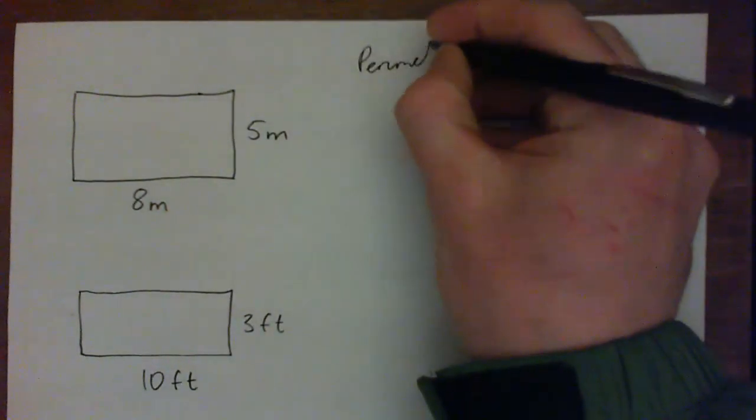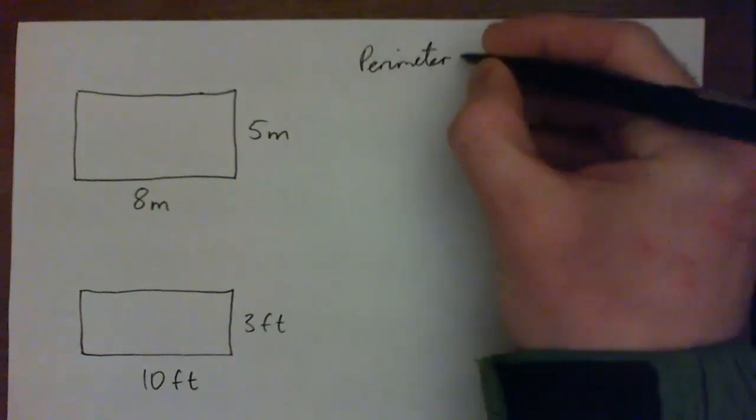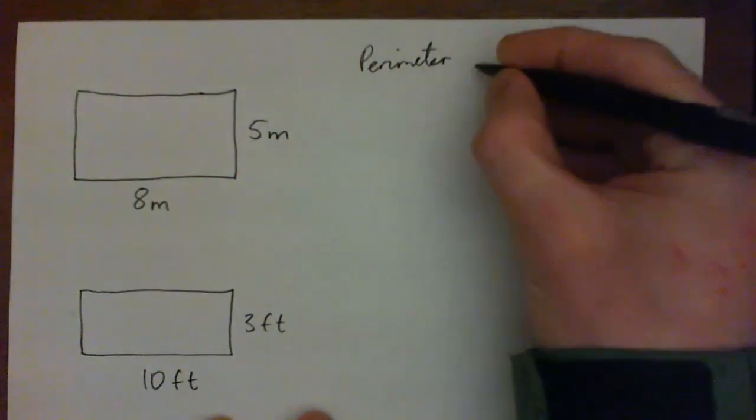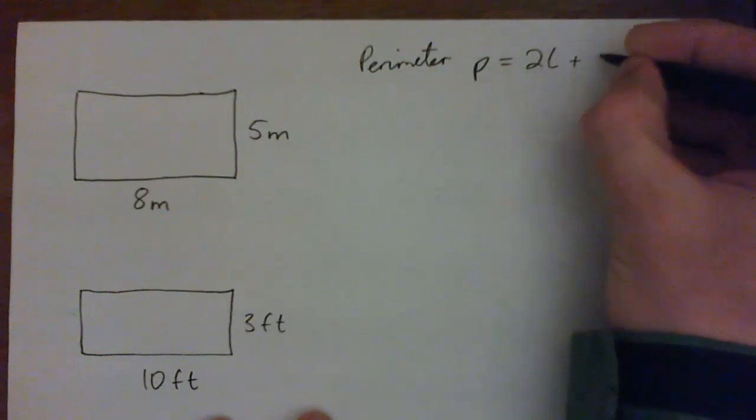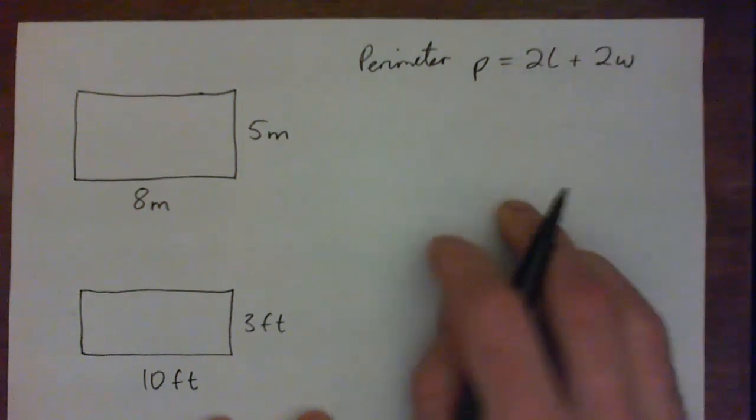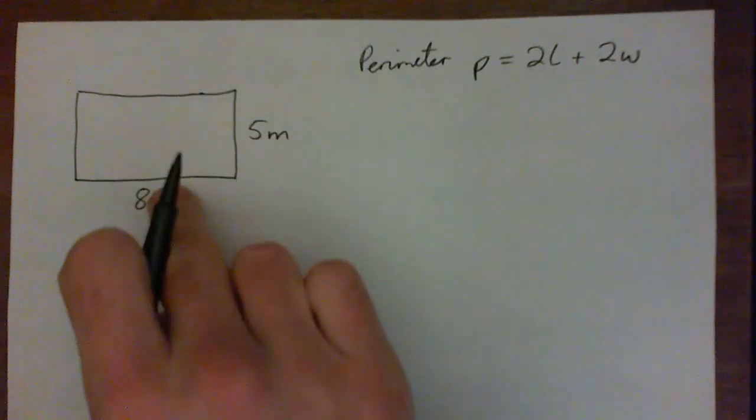Perimeter is the distance around the outside. We have perimeter P equals twice the length plus twice the width, because every rectangle is two lengths and two widths.